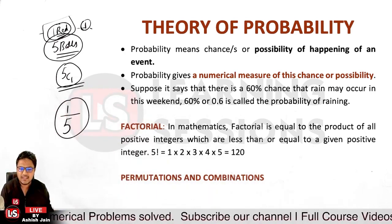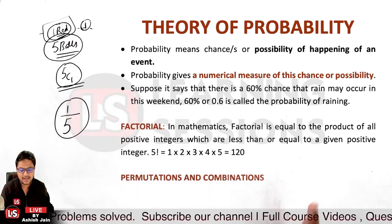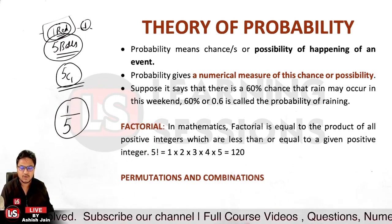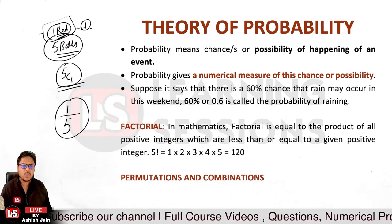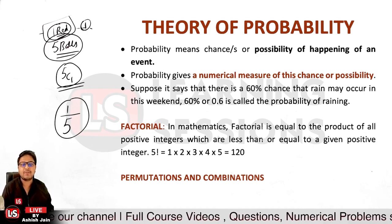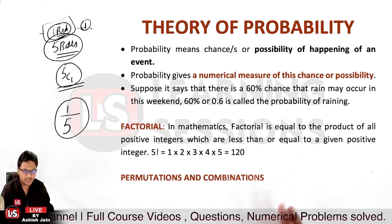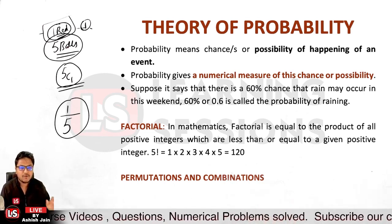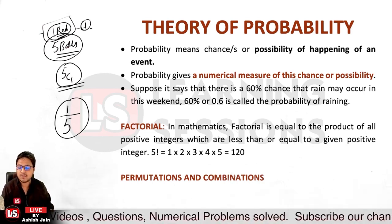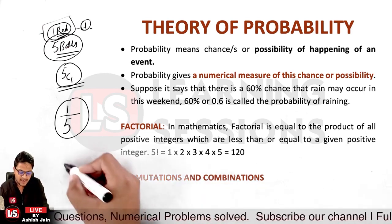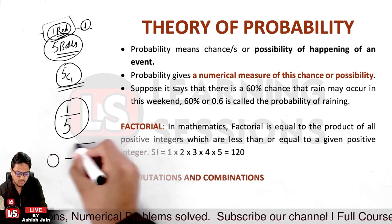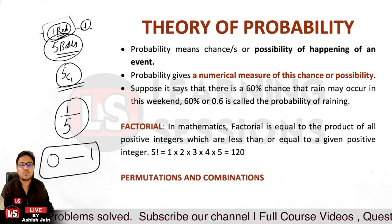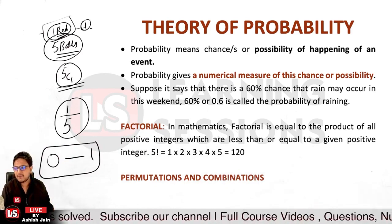Probability is related to the possibility of happening of a particular event. It is a numerical measure of your chance or possibility of occurrence, and its value varies from zero to one.